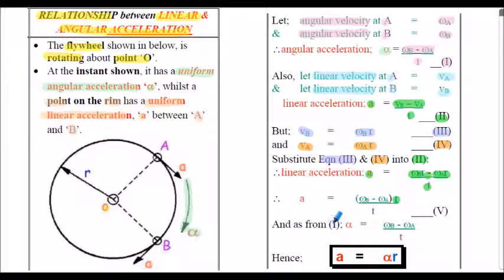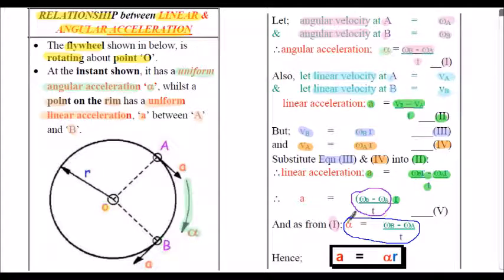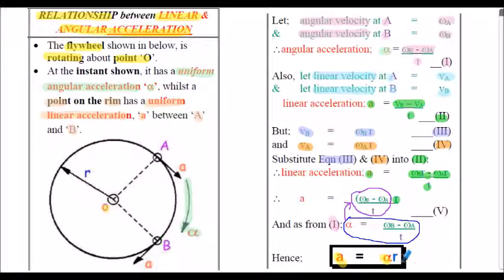Now from equation 1, we know that alpha equals ωB minus ωA divided by T. So we can replace that part of equation 5 with alpha, and we end up with the final relationship: a = αr. That's a very useful relationship that underpins lots of work in kinematic and dynamic analysis, which we'll review in other presentations.